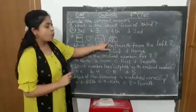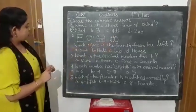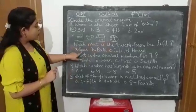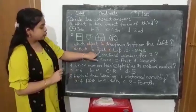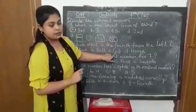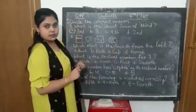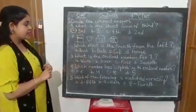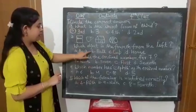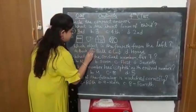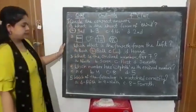So the answer is ball. See the options: A: Book, B: Ball, C: Cup, D: House. So what is the correct answer? The answer is B, Ball. So we have to circle B.